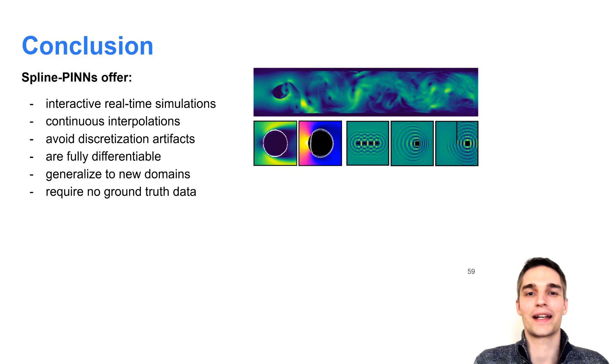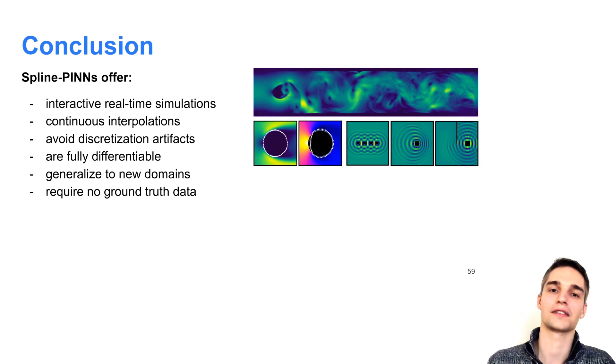So in conclusion, we can say, spline PINs combine the advantages of physics-informed and physics-constrained neural networks. They offer fast, interactive real-time simulations, allow for continuous interpolations, avoid discretization artifacts, are fully differentiable, generalize to new domains and don't require any ground-truth data for training. Furthermore, the accuracy for drag and lift coefficients of data-free, deep learning-based methods gets closer to professional industrial CFD solvers like ANSYS while being orders of magnitudes faster.